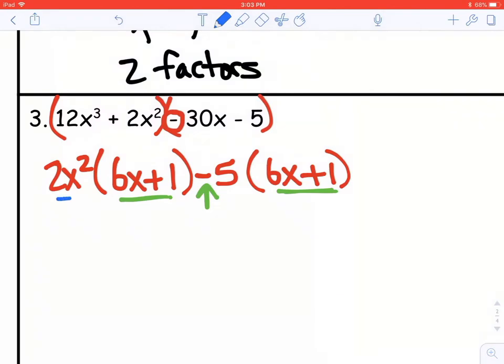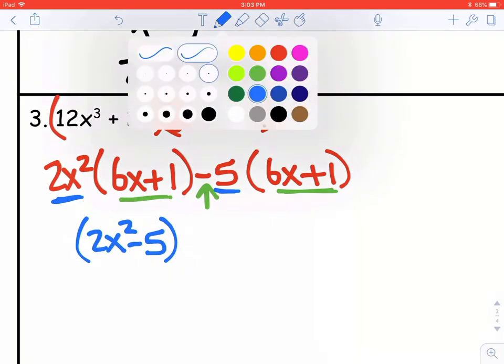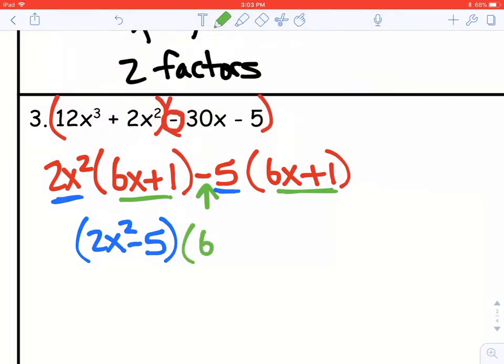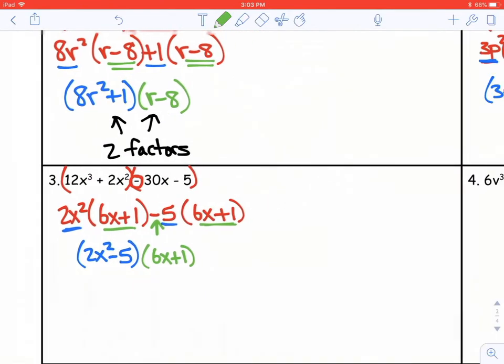And now, let's put things together. So we have 2x squared minus 5 is our first factor. And then, oh, let me keep my color scheme going, 6x plus 1 is the one that's in common, so we just need one of those.